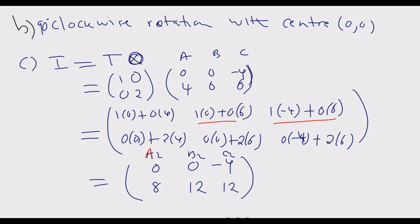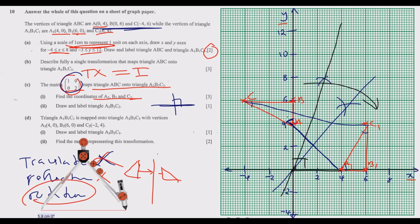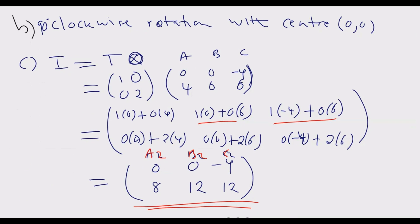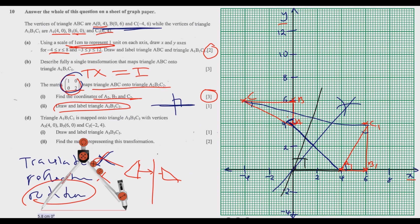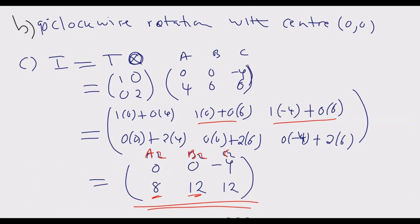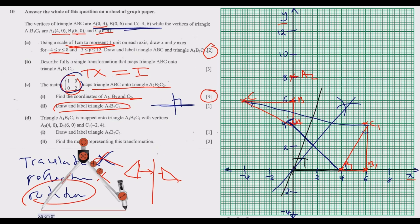Once you have those coordinates, you earn the three marks. Now draw triangle A2B2C2 on the graph paper. A2(0,8) is here, B2(0,12) is here, and C2(-4,12) is here. Join these points with your ruler to form and label triangle A2B2C2. Once done, you get this one mark.